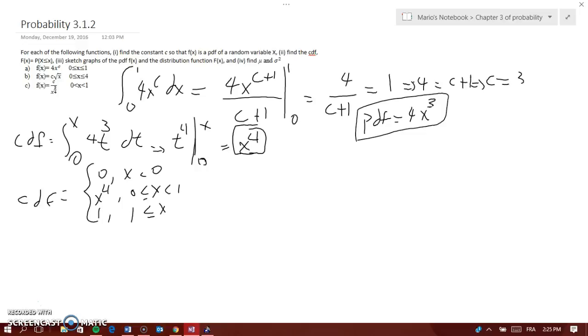Now, how do we find the mu and sigma squared? The expected value of a PDF or CDF is x times f of x. Remember, in a discrete variable, that would be equal to the summation of x times f of x. But here, because we're doing intervals, it would be the integral of x times f of x. So the expected value, which is the mean, would be equal to from 0 to 1, 4 x to the power of 4, dx.